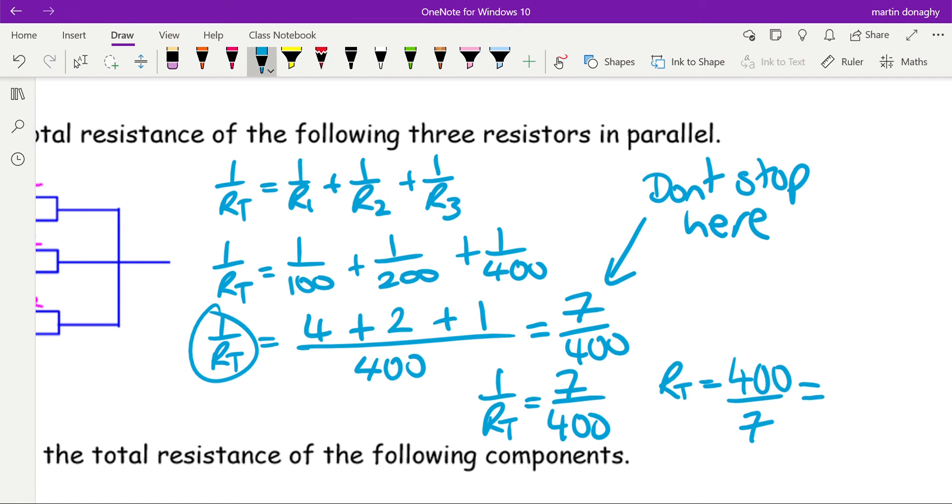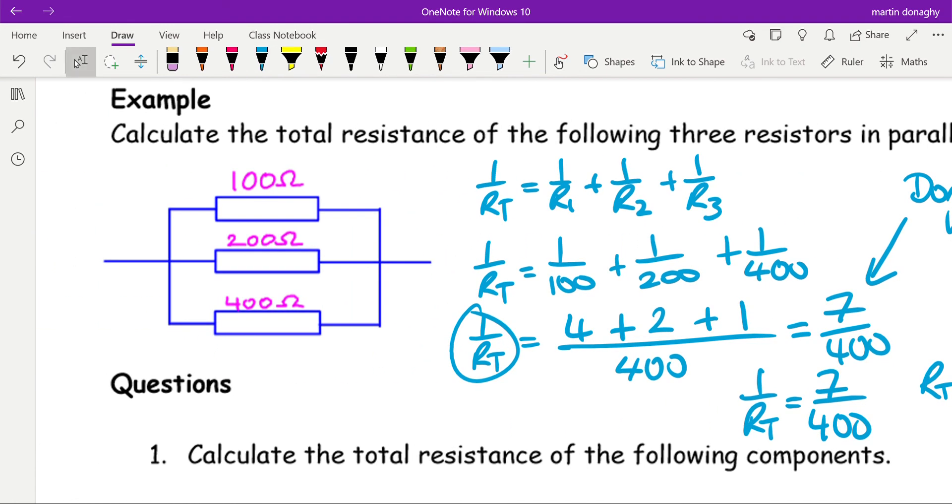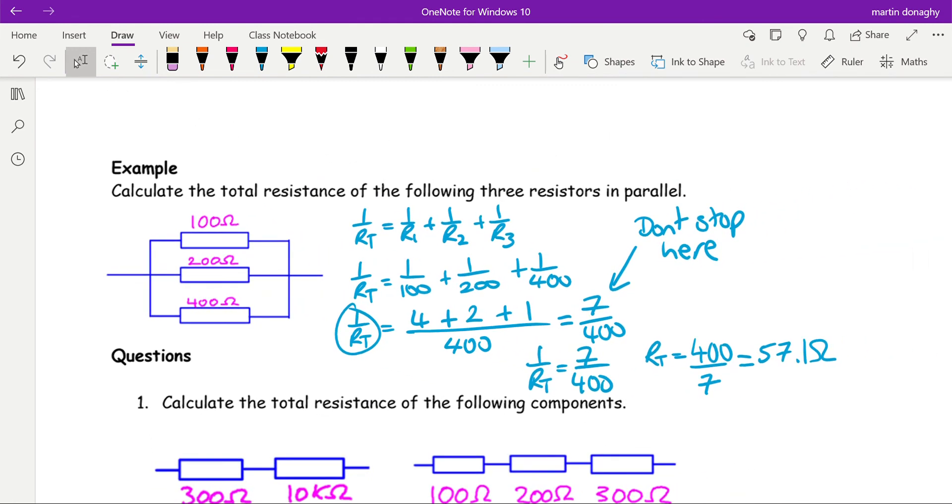You can just write it as a decimal. We usually leave it as that in an exam, and it gives us 57.1 ohms. And you can see that the resistance is less than even the smallest resistor that is in those three resistors in parallel. Okay, so try the questions below and give those a go.